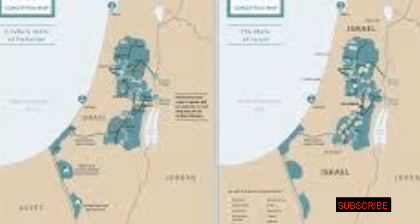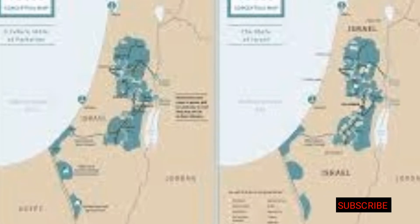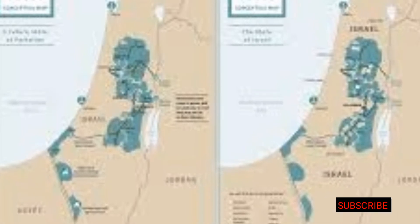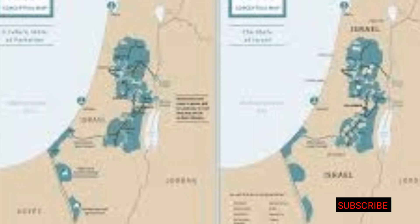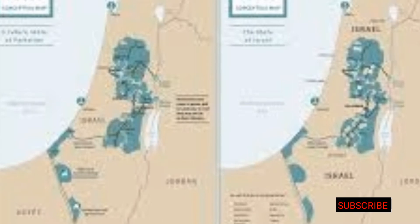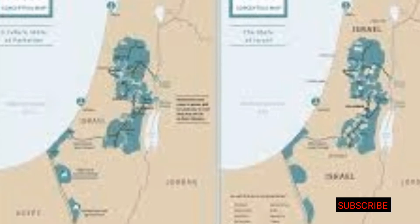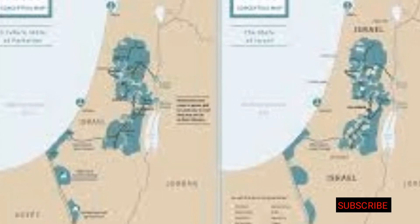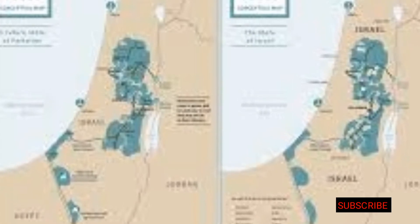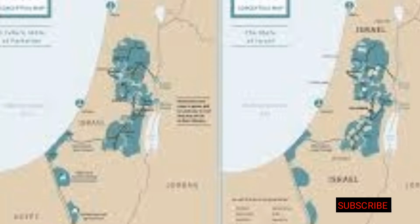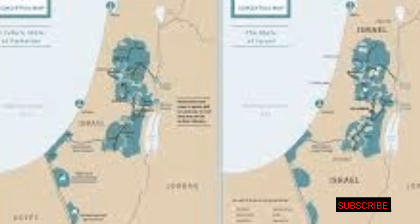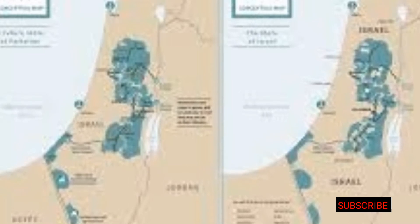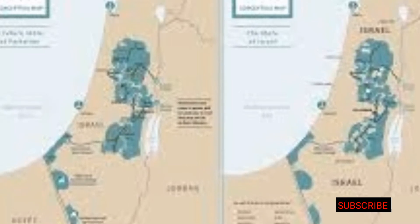The plan states that these resolutions have affirmed the Palestinian right to self-determination, that territory claimed by Palestinians is under illegal occupation, that Israeli settlements are illegal, and that the annexation of East Jerusalem was illegal.